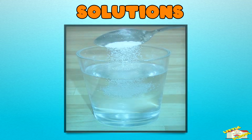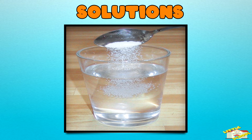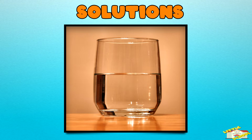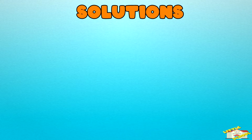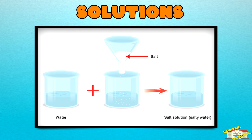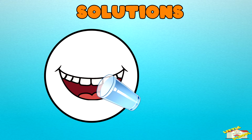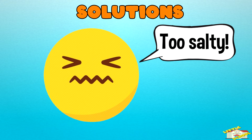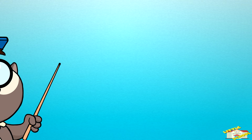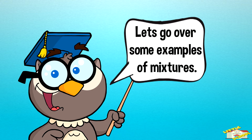In a solution, things mix so well that they look like one single thing. For example, if you put salt into water, the salt dissolves and you can't see it anymore — it looks like just water. But the salt is still there; if you taste it, you'll notice it is salty. It's completely mixed in.